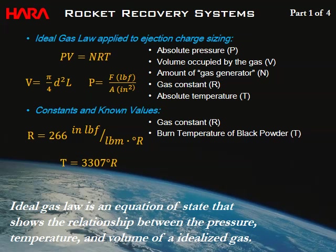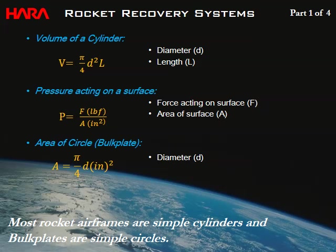Black powder burns at about 3,300 Rankine. Most rocket airframes are simple cylinders and bulk plates are simple circles, which makes the math work out nicely. Key geometric equations: volume of a cylinder (the airframe segment holding the parachute), pressure acting on a surface as force over area (P = F/A), and area of a circle (the circular bulk plate area).